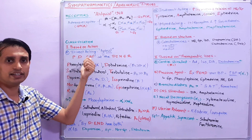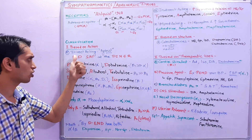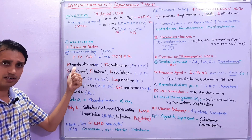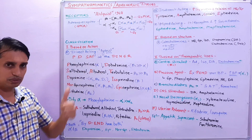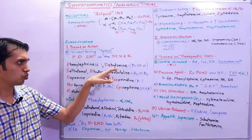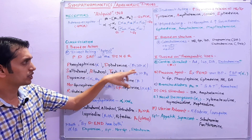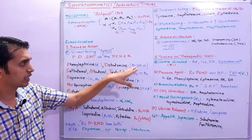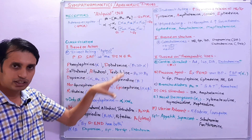We can remember direct-acting drugs by the mnemonic 'PD set at the dinner.' P for phenylephrine, which acts on alpha receptors. D for dobutamine, which acts on beta-1 and alpha-1.